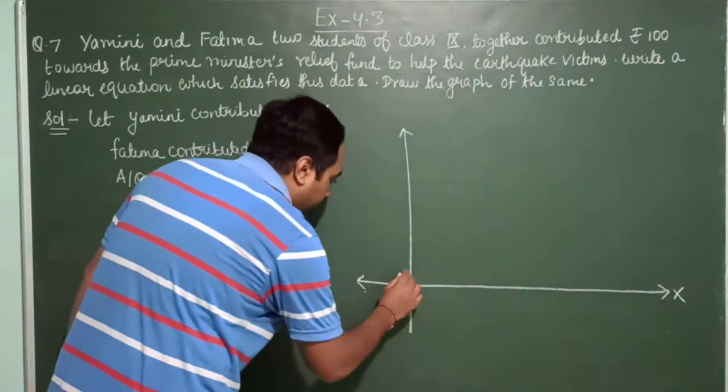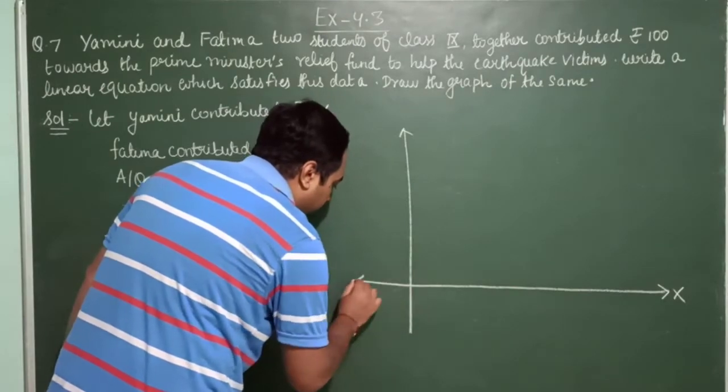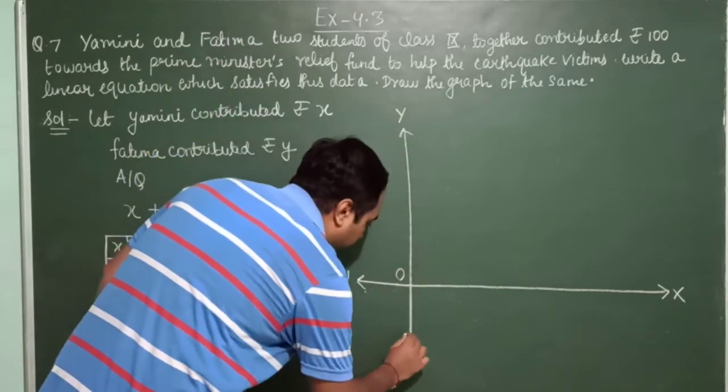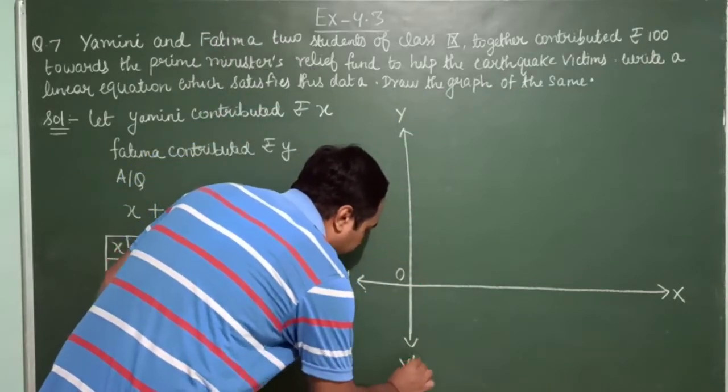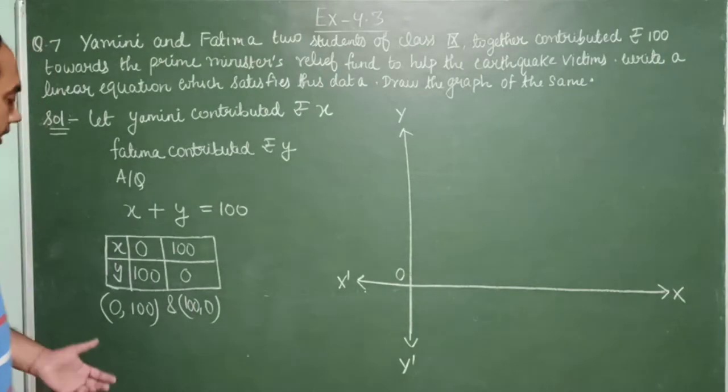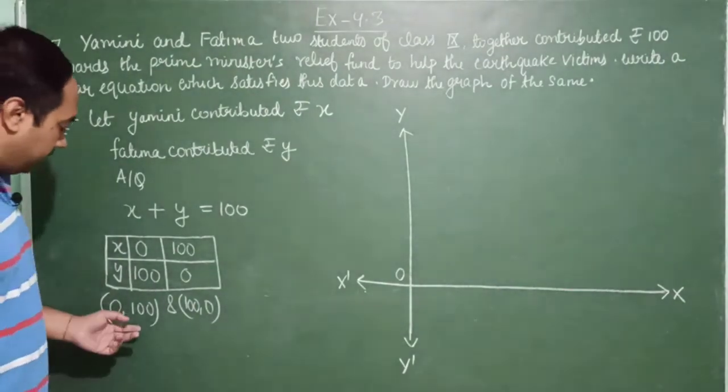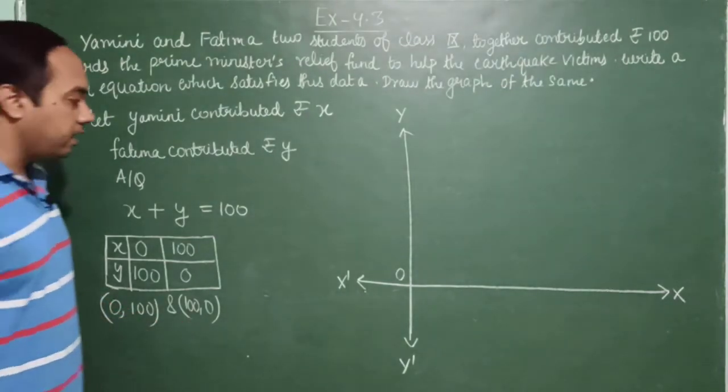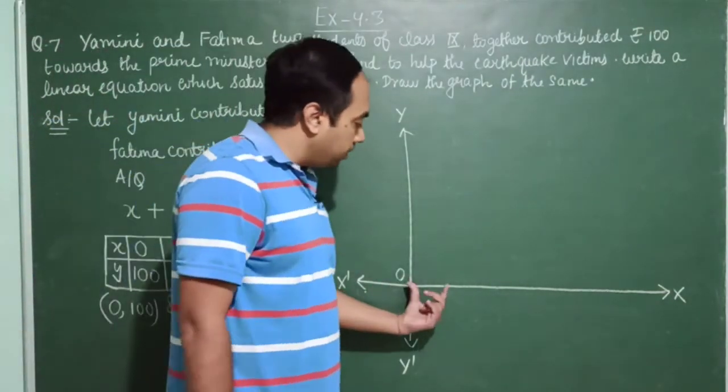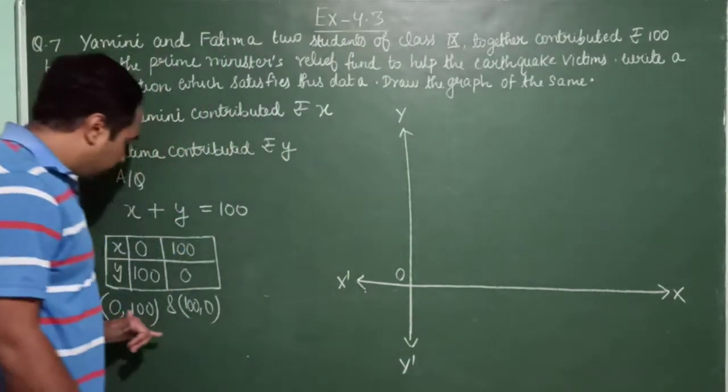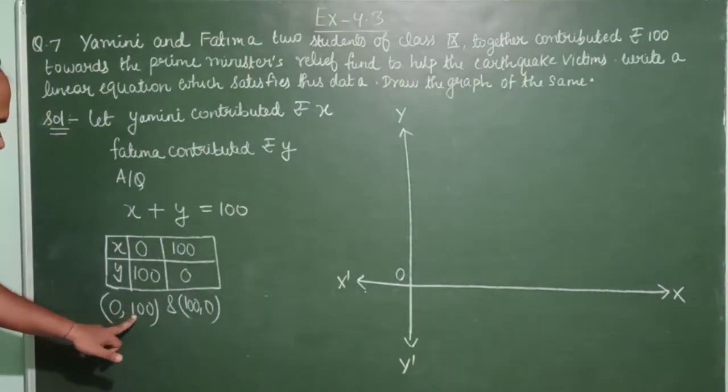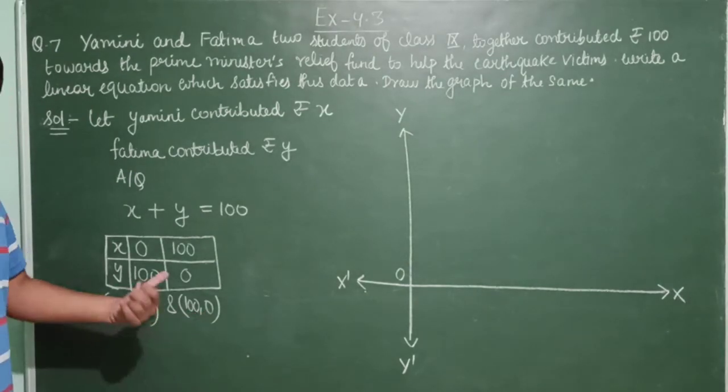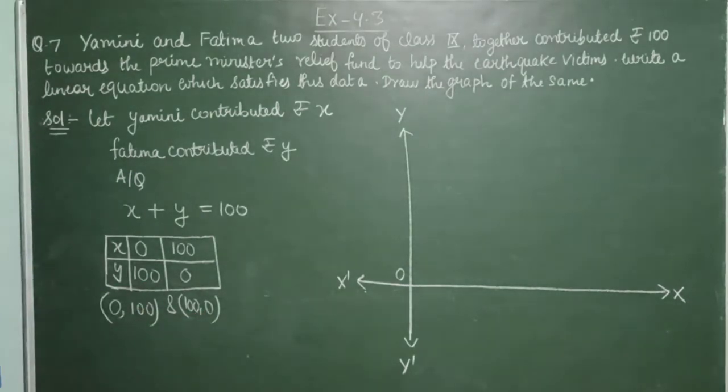X, O, X dash, Y, O, Y dash. Now you can see that the coordinate values are quite large. So what do we do here? We can consider scale as: on X axis, 1 cm equal to 10 rupees, as well as on Y axis, 1 cm equal to 10 rupees.